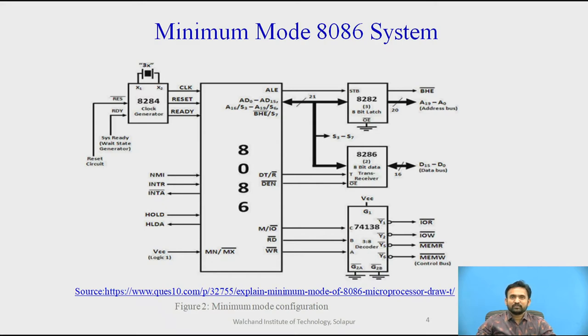Latches are generally buffered output D-type flip-flops like 8282, and they are used for separating the valid addresses from the multiplex address and data signals. They are controlled by the ALE signals generated by 8086.